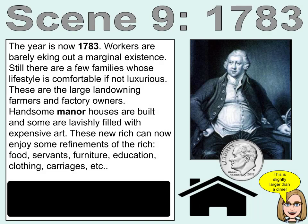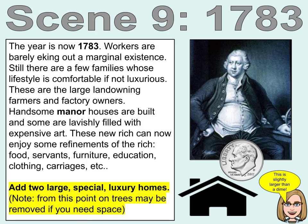Scene 9. The year is now 1783. Workers are barely eking out a marginal existence. Still, there are a few families whose lifestyle is comfortable, if not luxurious — the large landowning farmers and factory owners. Handsome manor houses are built and some are lavishly filled with expensive art. These new rich can now enjoy refinements such as food, servants, furniture, education, clothing, and carriages. Add two large special luxury homes, and note that from this point forward, trees may be removed if you need some.